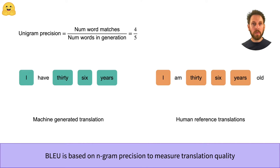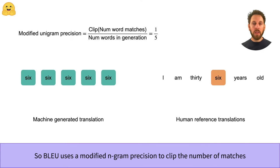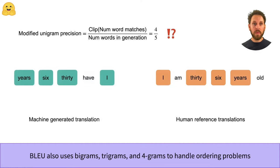In general, precision ranges from 0 to 1 and higher precision scores mean a better translation. But this isn't the whole story, because one problem with unigram precision is that translation models sometimes get stuck in repetitive patterns and just repeat the same word several times. If we just count the number of word matches we can get really high precision scores even though the translation is terrible — for example if a model just generates the word 'six' six times we get a perfect unigram precision score. To handle this, BLEU uses a modified precision that clips the number of times to count a word based on the maximum number of times it appears in the reference translation. In this example the word 'six' only appears once in the reference, so we clip the numerator to one, and the modified unigram precision now gives a much lower score as expected.